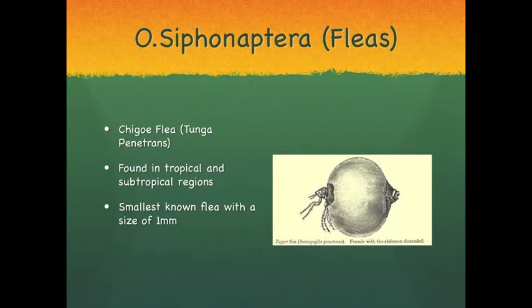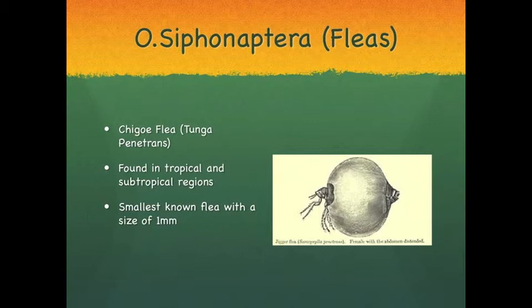The third order that will be discussed is order Siphonaptera, which are the commonly known fleas. The first flea we are going to discuss is the chigoe flea, Tunga penetrans. This parasitic flea is found in most tropical and subtropical environments. At one millimeter long in size, it is the smallest known flea to humankind. The parasitic flea lives in soil and sand, feeding on warm-blooded hosts such as humans, cattle, sheep, dogs, and mice. Breeding females burrow into exposed skin on the feet of mammals, remaining there for two consecutive weeks while developing their eggs, during which time they swell dramatically, sometimes causing intense irritation.